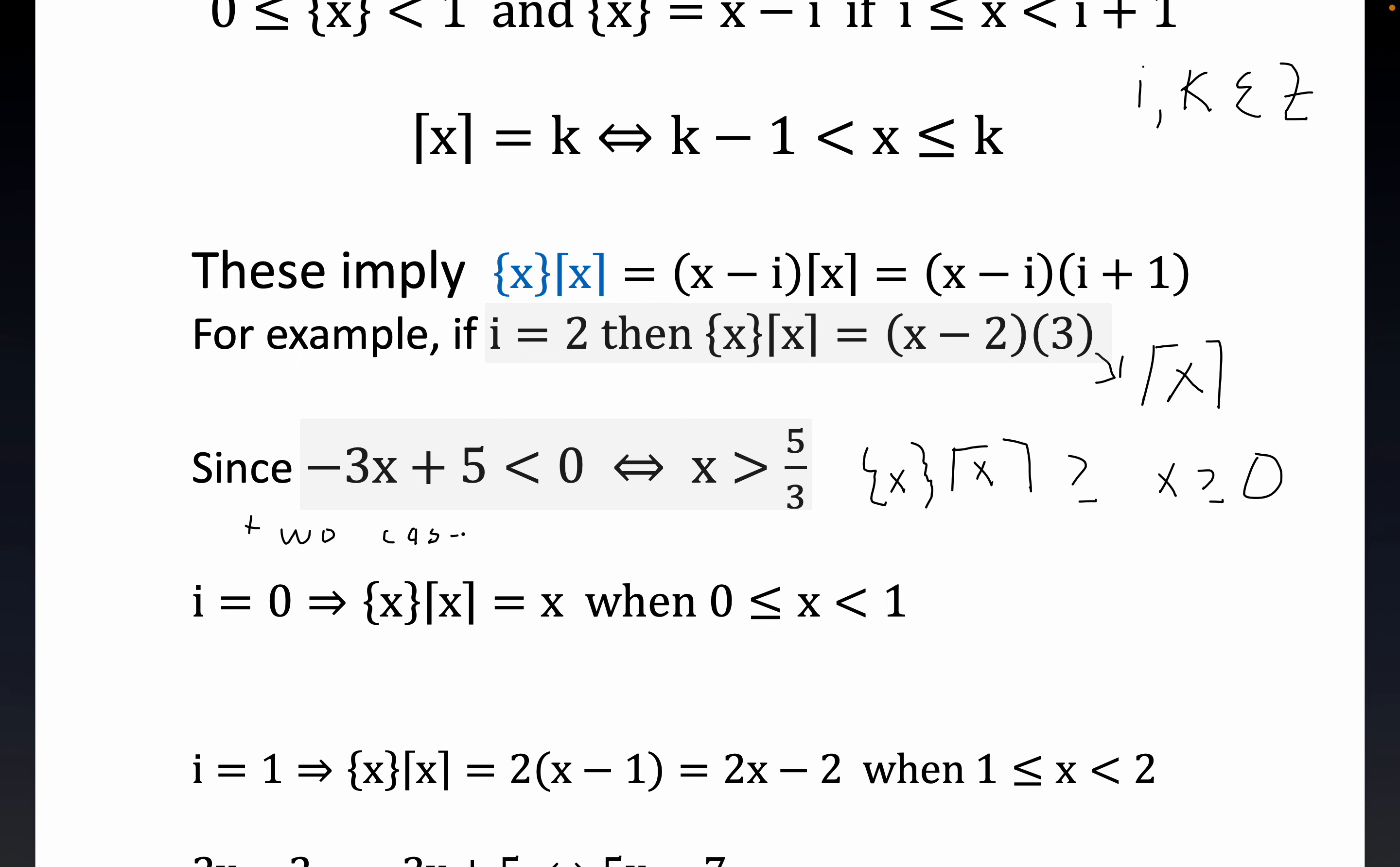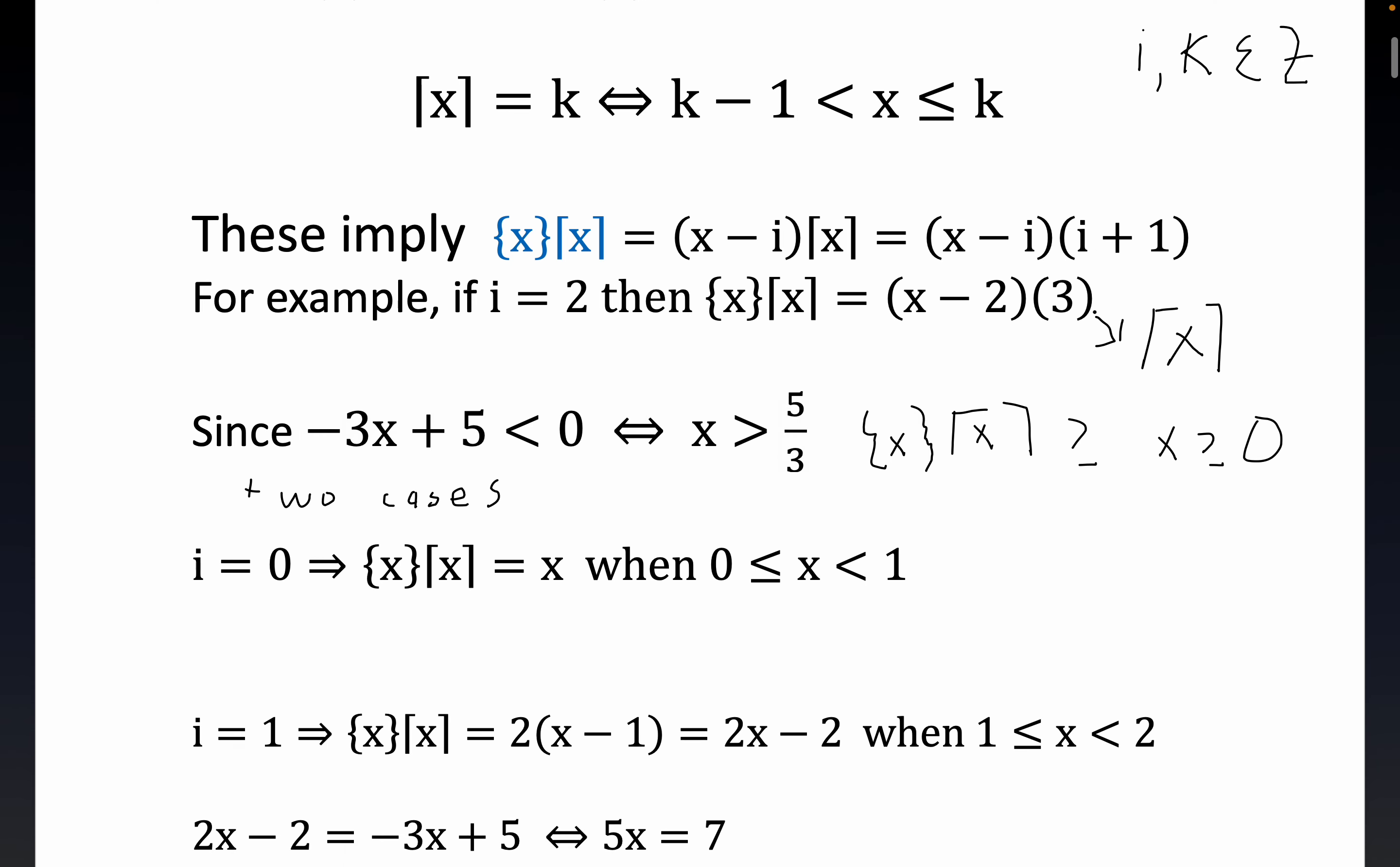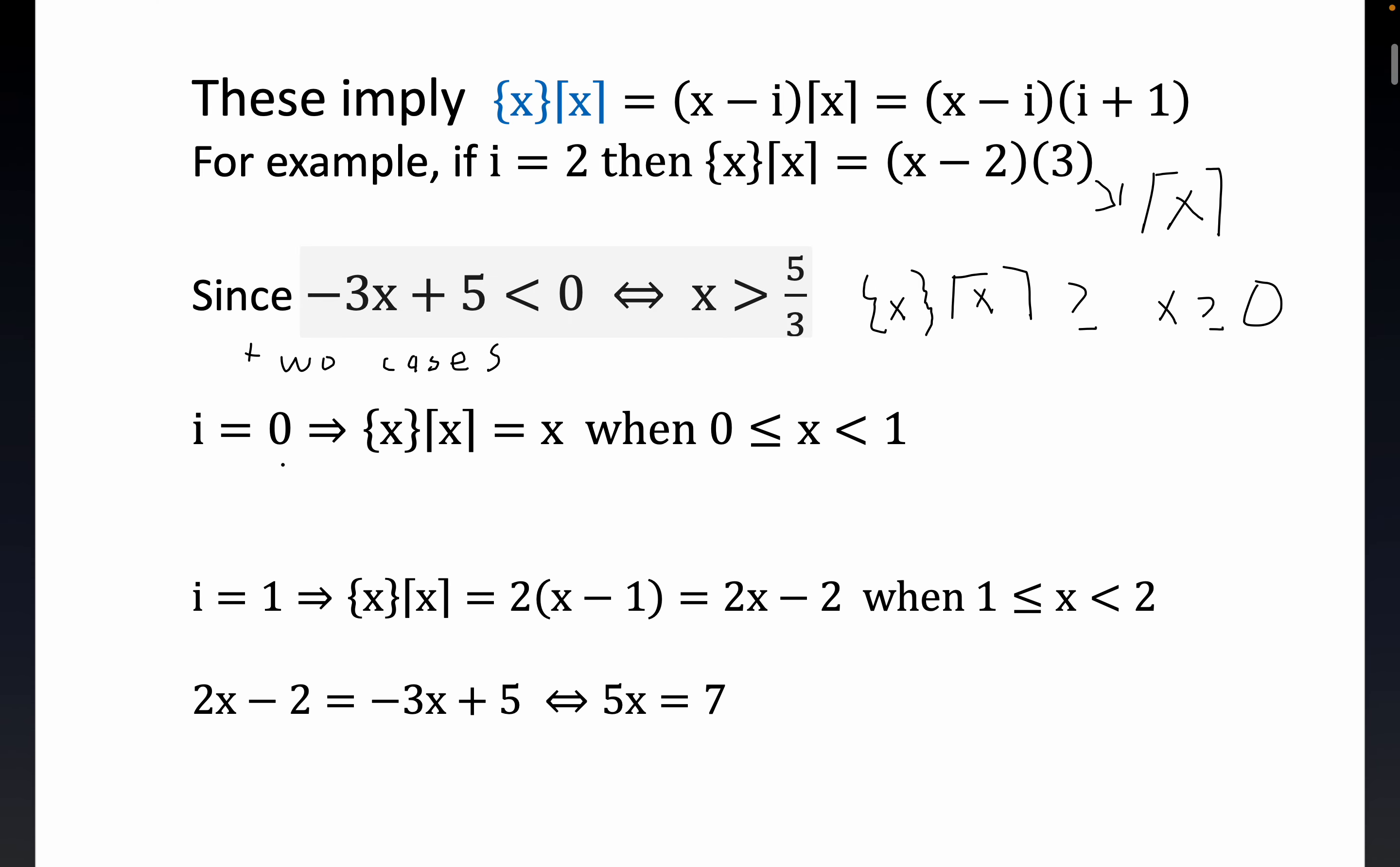i equals 0 and i equals 1. Because remember, i equals 1 implies that x is between 1 and 2. And so we only have to check i equals 0 and i equals 1.